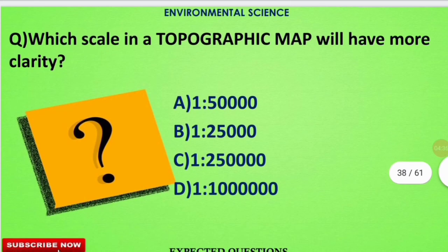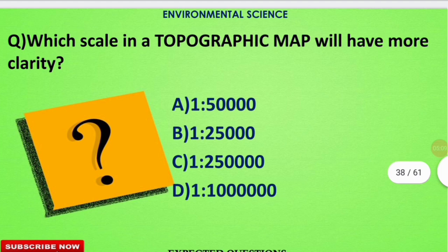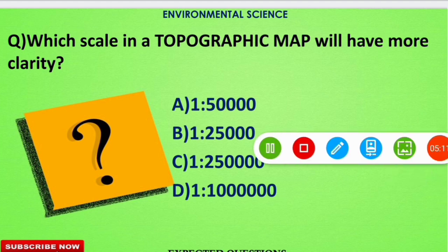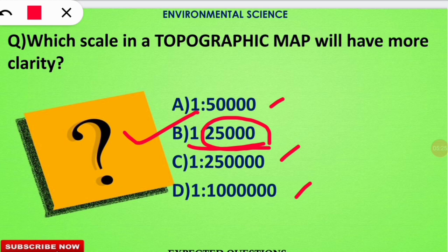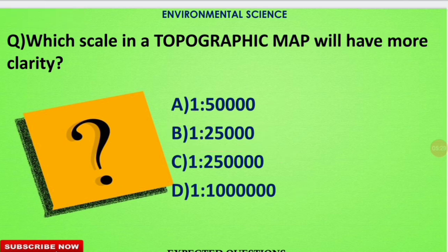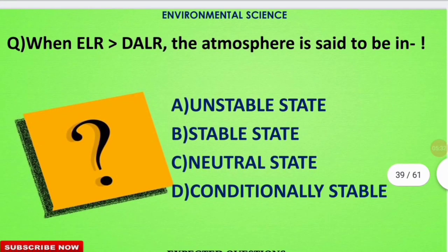The next question is: which scale on a topographic map will have more clarity? The correct option is B — a scale of 1:25,000. The ratio between 1 and 25,000 is the largest among the options. When the denominator has a lower value, the map has greater clarity.